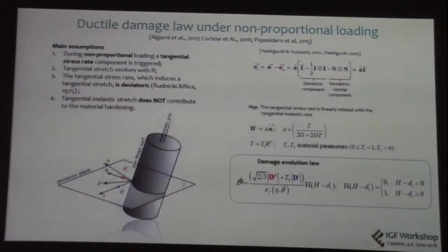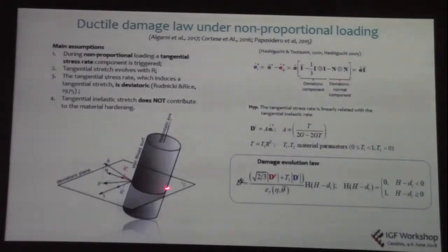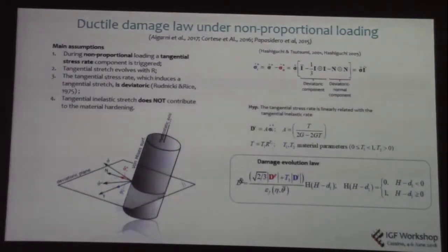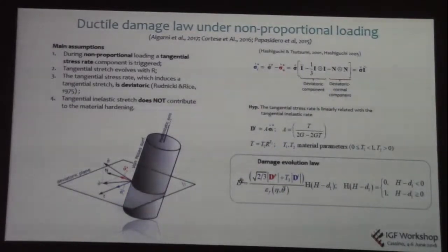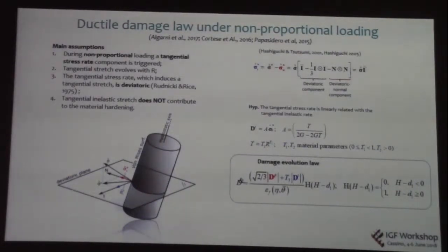The idea is to modify the approach to take into account the non-proportional loading case. In non-proportionality, there is a rotation of the principal stress and strain direction, which triggers a non-negligible tangential component of the stress rate relative to the plastic potential. We used an idea developed in 2001 by Professor Ashibuchi and Professor Tsutsumi to characterize this tangential stress rate, which — from a previous study by Rudin-Ike and Rice in 1975 — was defined to be purely deviatoric, as is the normal stress rate. We want to modify the damage evolution law to take into account two contributions: the plastic deformation developing along the normal vector to the plastic potential, and the inelastic stretching which is purely tangential, as a consequence of the rising tangential component of the stress rate.